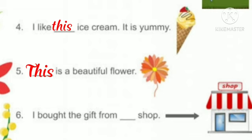And the last sentence is, I bought the gift from dash shop. You can see the arrow that is showing the distance. It means it is far. So, we use that. I bought the gift from that shop.